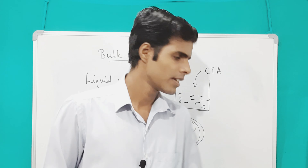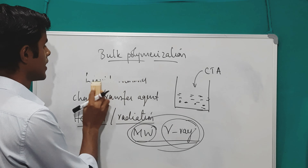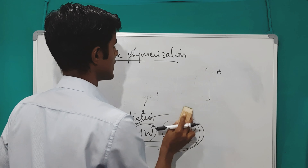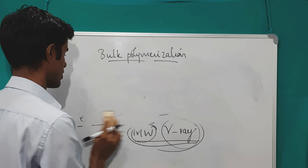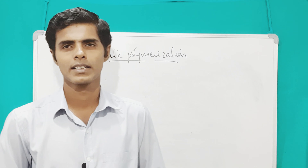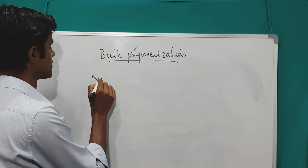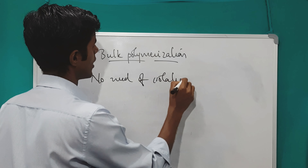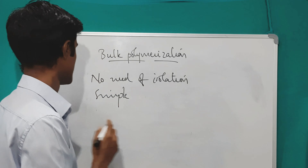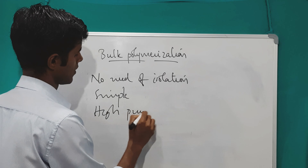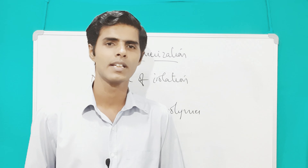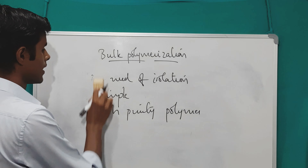Now, the advantages of bulk polymerization technique: it is simple to perform using the liquid monomer, and isolation is not required — whatever we get at the end of the reaction is considered the product. No need for isolation. Also, high purity polymers can be obtained. These are the key advantages of bulk polymerization technique.